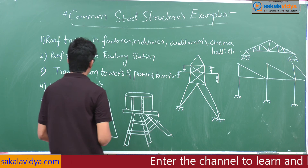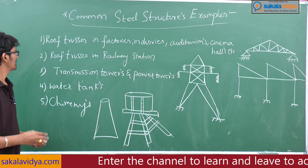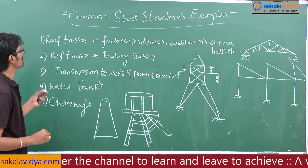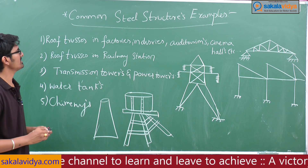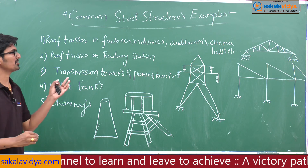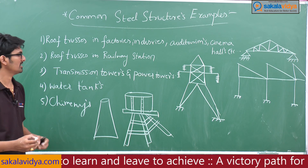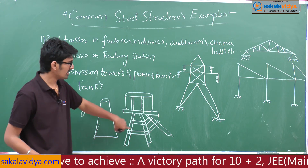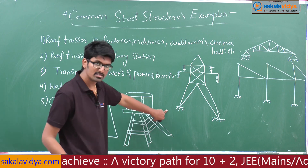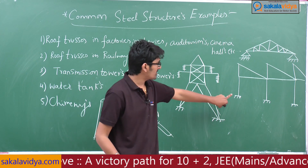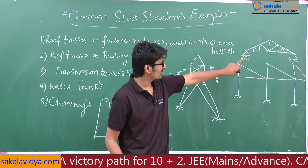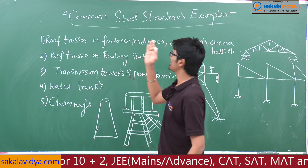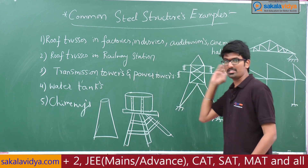In summary, common steel structure examples include: transmission towers and power towers, roof trusses in railway stations, roof trusses in factories, industries, auditoriums and cinema halls, steel chimneys, steel water tanks, and industrial roof trusses. These are the examples of common steel structures.